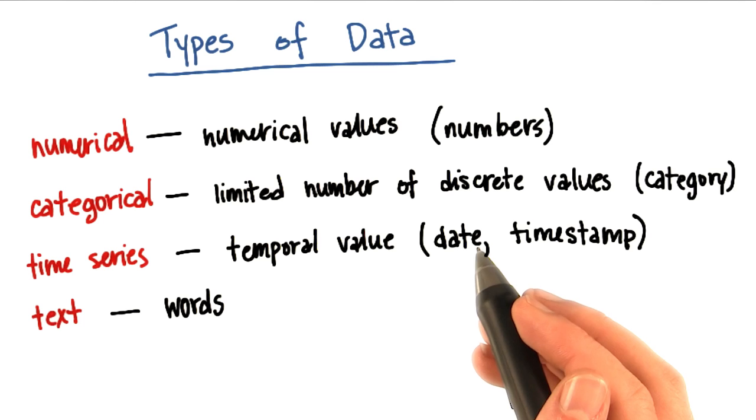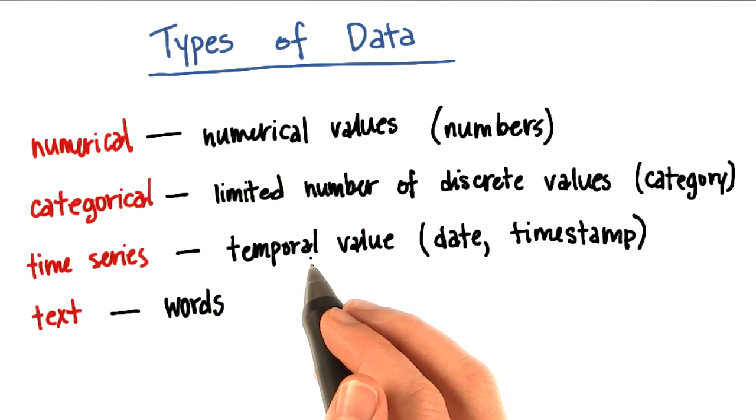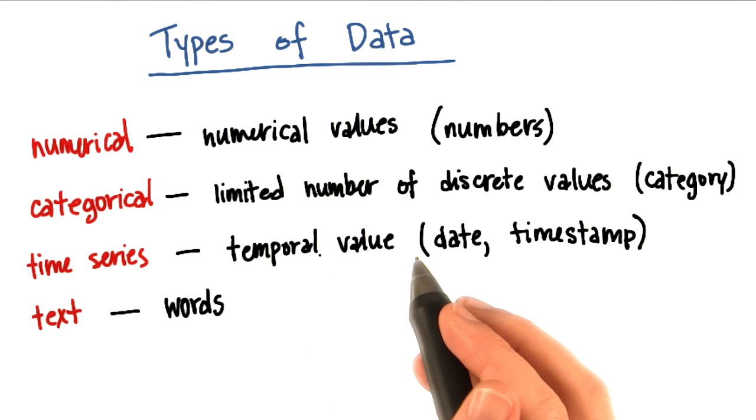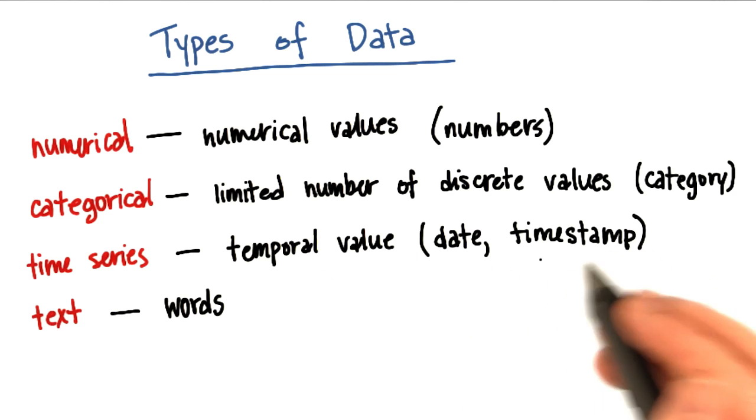Another one that's very important, especially in particular fields like finance, is time series data. And this is data that has a temporal value attached to it. So this would be something like a date or a timestamp that you can look for trends in time.